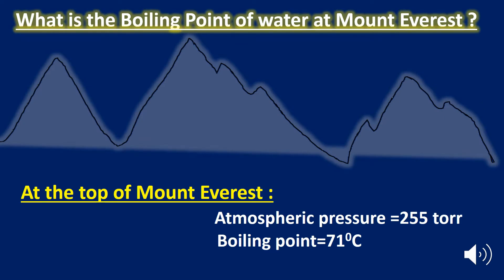Do you want to know the boiling point of water at the top of Mount Everest? As we have already discussed, the boiling point is directly proportional to the atmospheric pressure. It means that with the increase of external pressure, the boiling point will increase, and with the decrease of external pressure, the boiling point decreases.